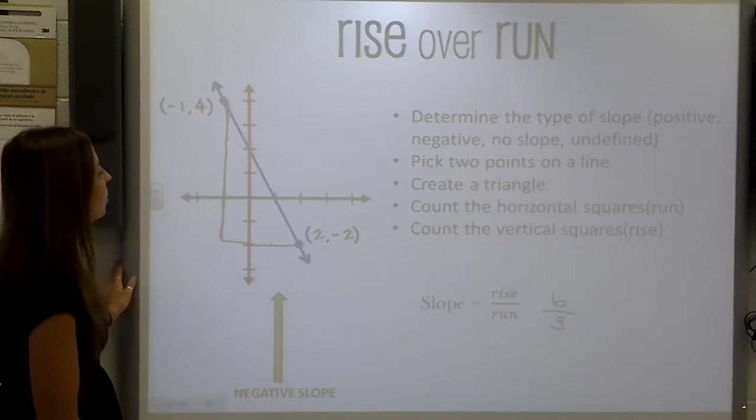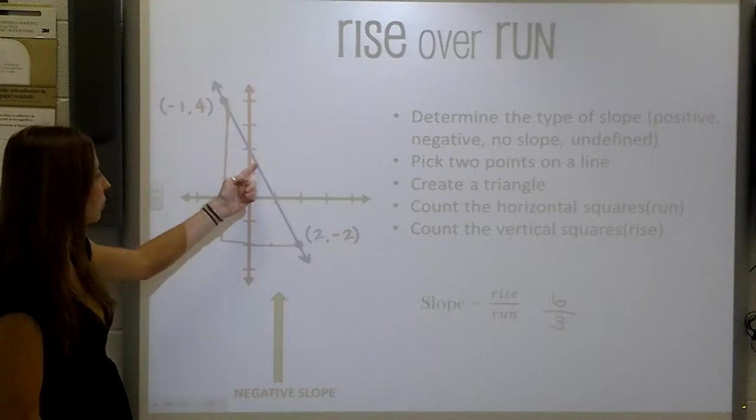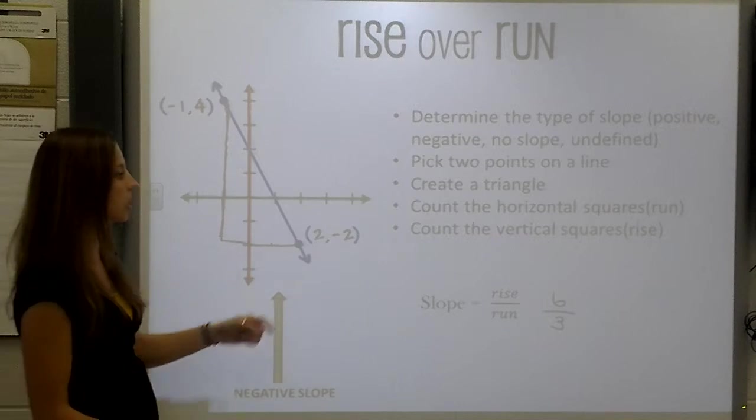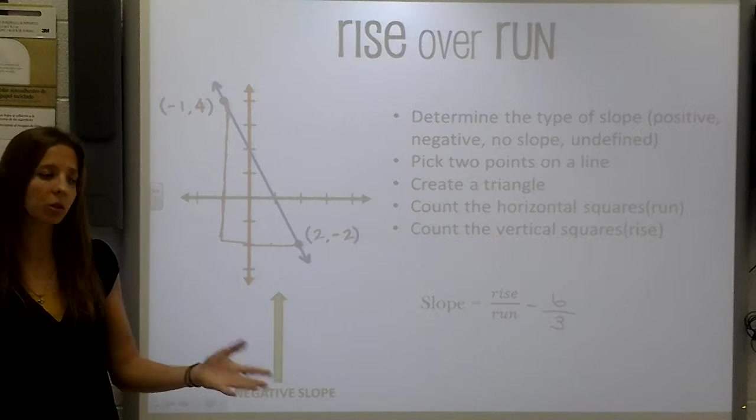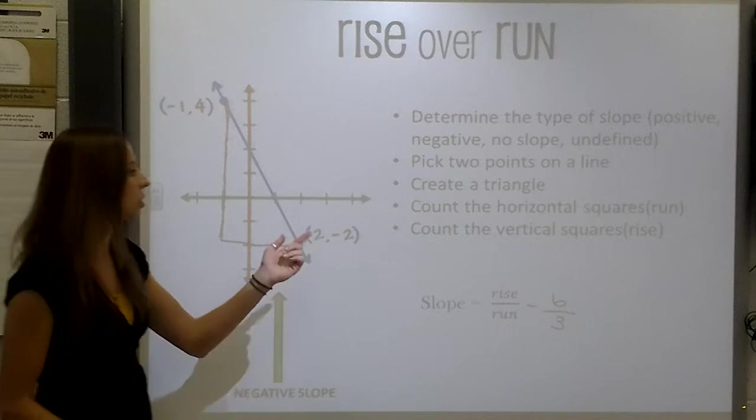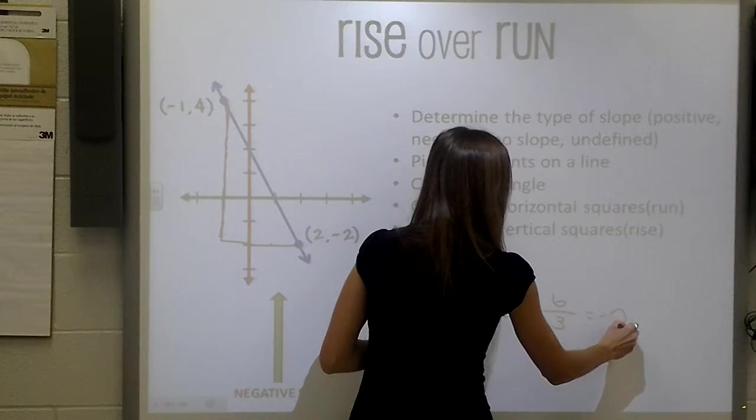But if you notice, from left to right, our arrow is moving in a downward direction, which means that we will have a negative slope. And we can also reduce this fraction so that we see it be a negative 2.